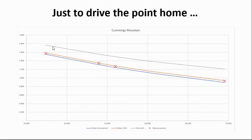For Cummings Mountain, I've done the same. So again, this is the flat earth prediction. The blue line is the geometric prediction, so no refraction. And the orange line is the globe model with standard refraction. And again, the red crosses my observations.